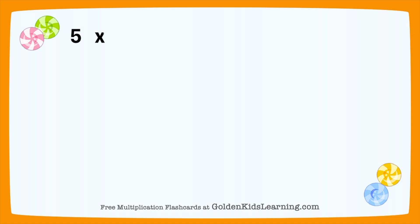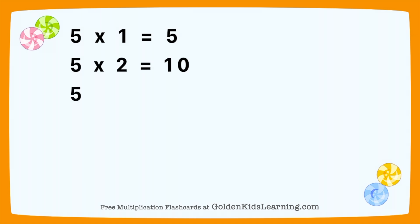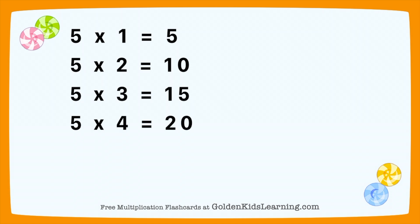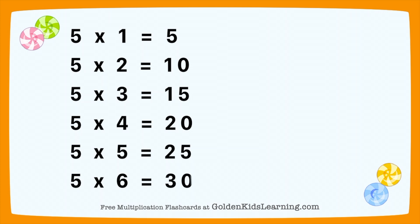5 times 1 equals 5. 5 times 2 equals 10. 5 times 3 equals 15. 5 times 4 equals 20. 5 times 5 equals 25. 5 times 6 equals 30.